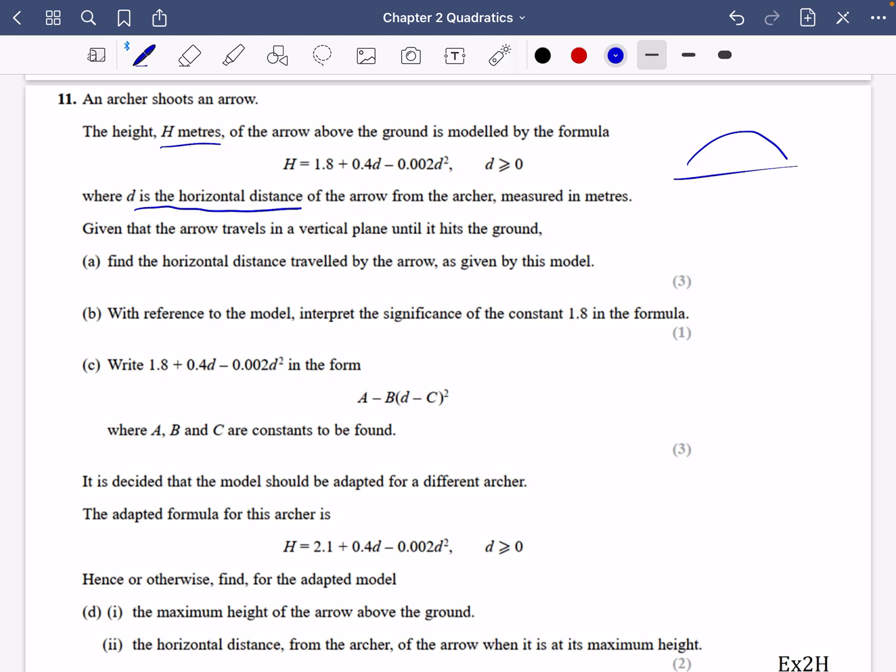Find the horizontal distance traveled by the arrow as given by this model. Well, at the end, it's going to come into the ground like this, and so at this point we could say that its height is equal to zero. So if h equals zero, we have 0 = 1.8 + 0.4d - 0.002d². I can literally go straight in with my calculator. I can put in -0.002, 0.4, and 1.8. I either come up with two values, one positive and one negative. So I'm going to take the positive one, and I'm just going to say that d equals 204.4 meters to one decimal place.